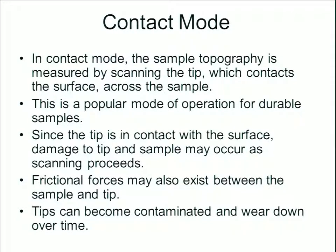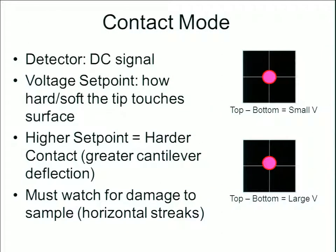Tips can quickly become contaminated and wear down over time due to the fact that they are in constant contact with the sample below. In contact mode, the detector provides a DC signal. We would start with a voltage set point, which allows us as an operator to determine how hard or soft the tip will touch and press down onto the surface below.